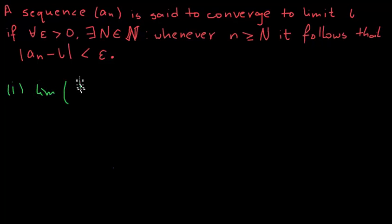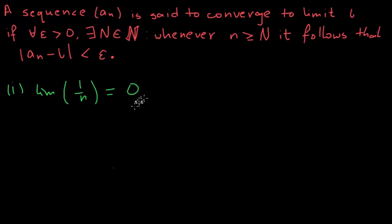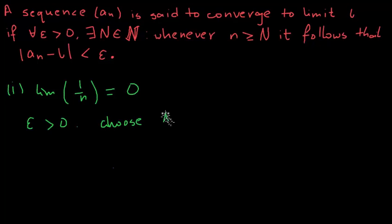The first problem is to prove that the limit of 1/n equals zero — these are all sequences, by the way. If you want to do it yourself, go ahead and pause the video and come back after. Let epsilon be some arbitrary positive number, epsilon greater than zero, and choose N to be any number greater than 1/epsilon.